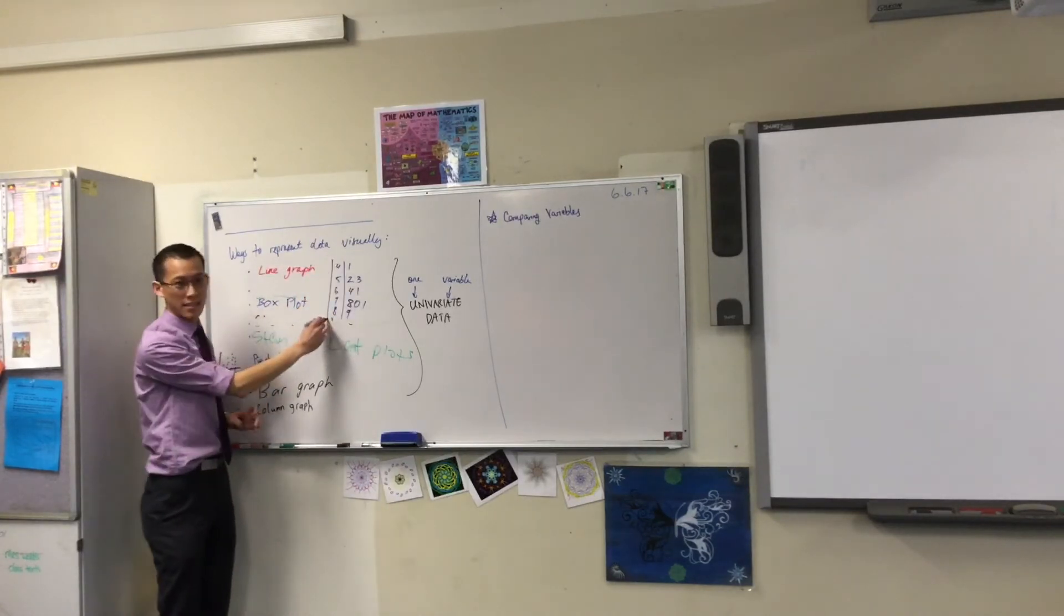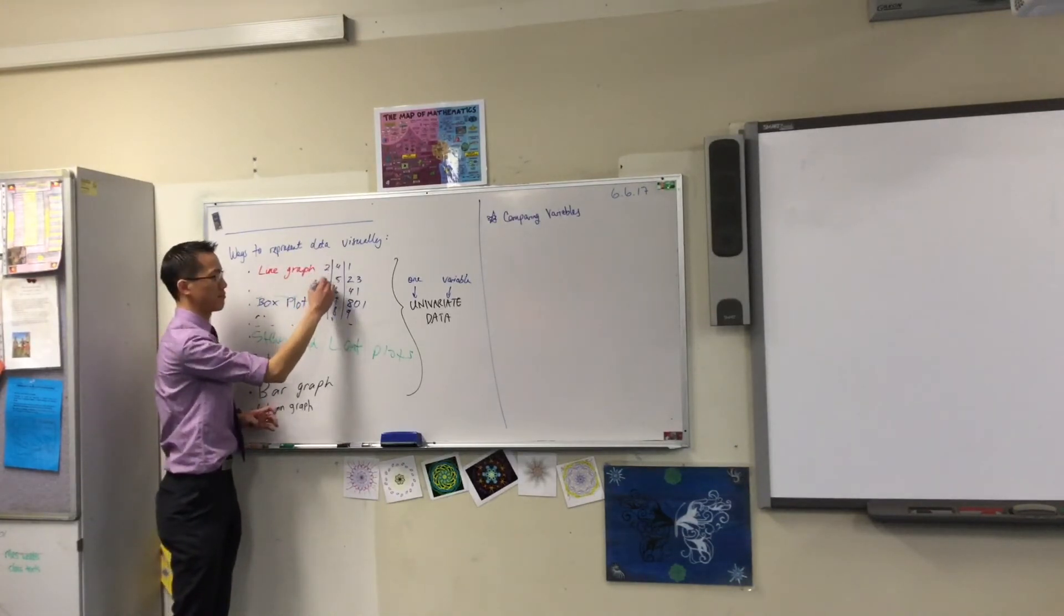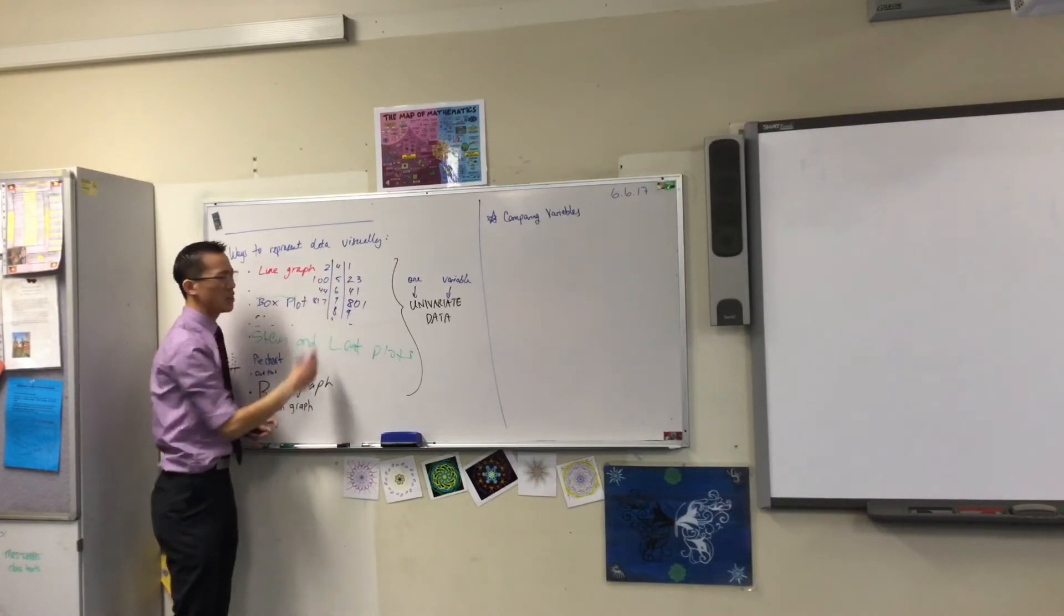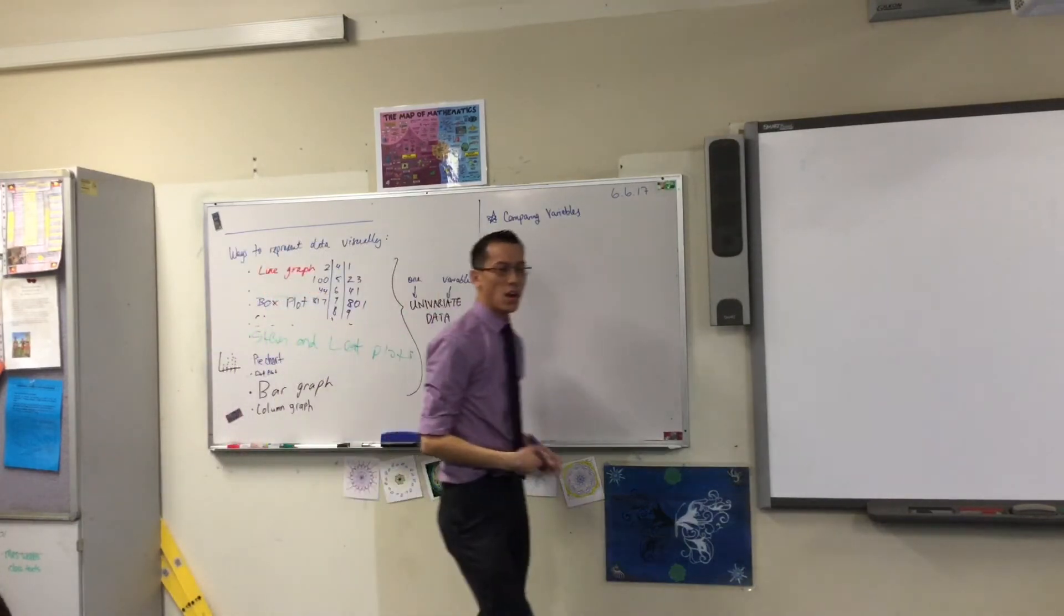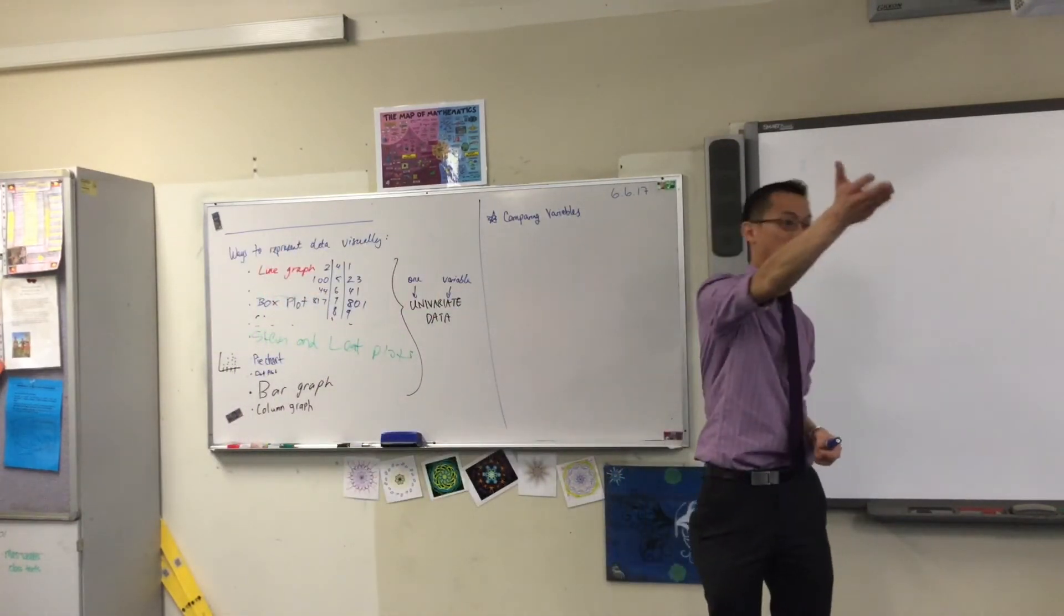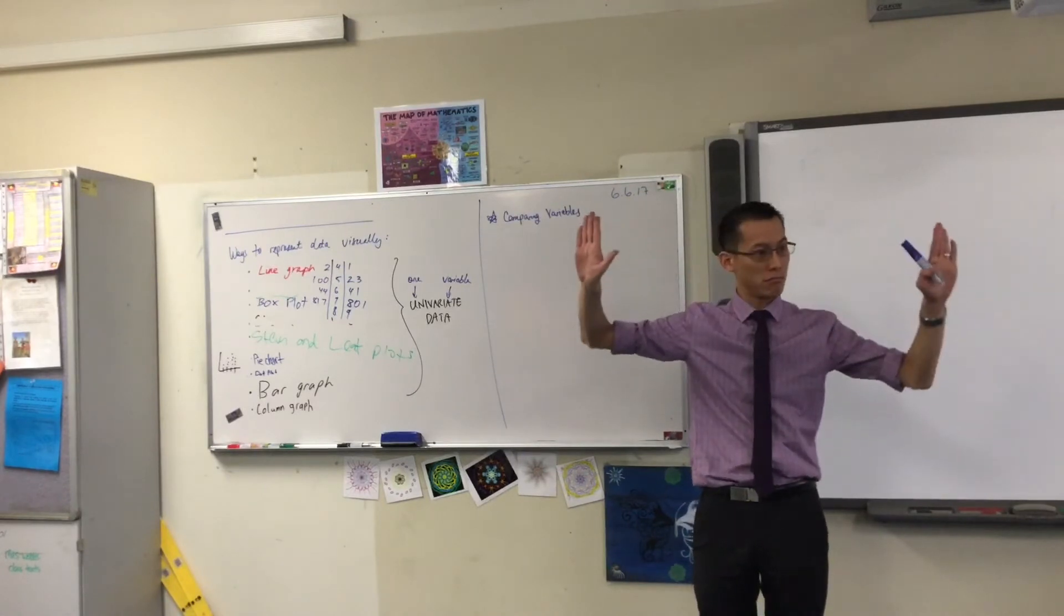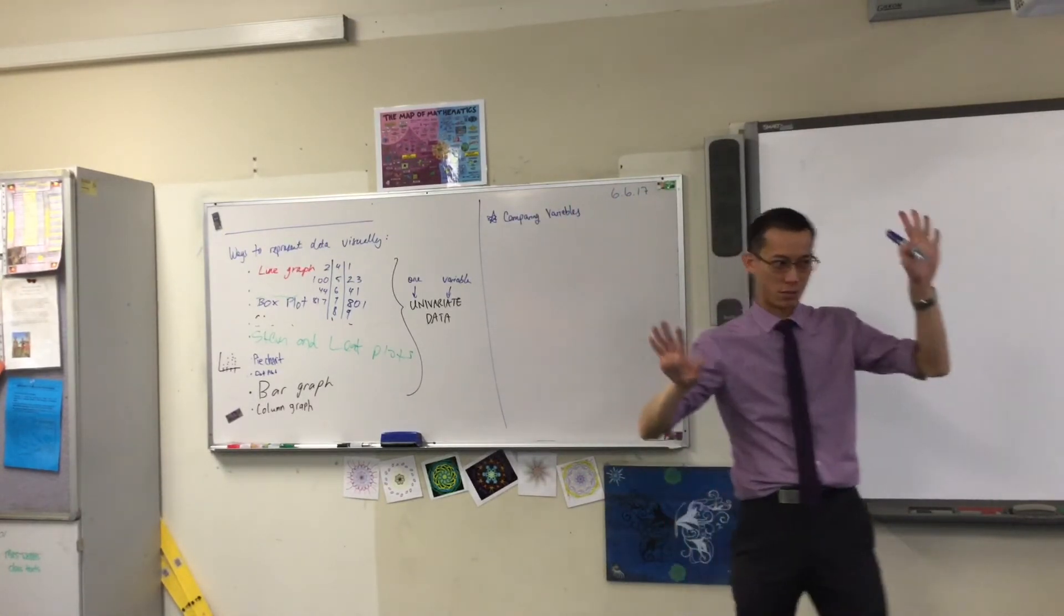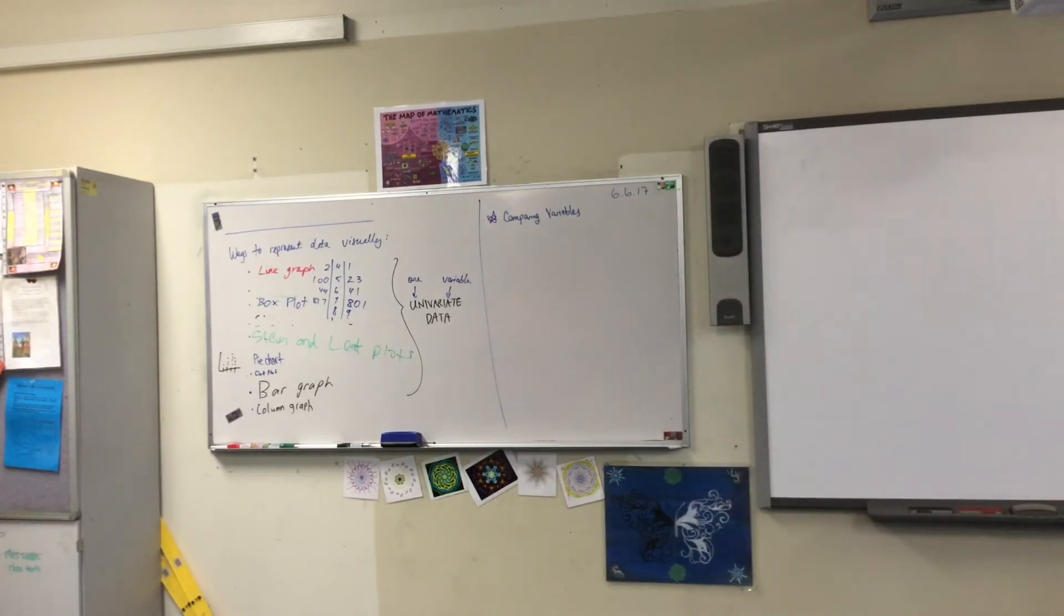So this is... We know what a stem and leaf plot looks like. But do you remember? We looked at things like this. What does this mean? We call these back-to-back. Because, for example, you might be comparing two different teams. Or, like, boys and girls. Or, Cherry Brook and Castle Hill. That's busy things like that!